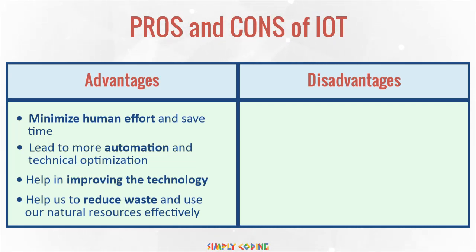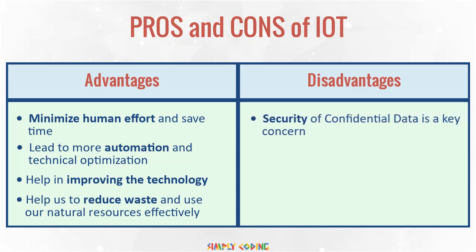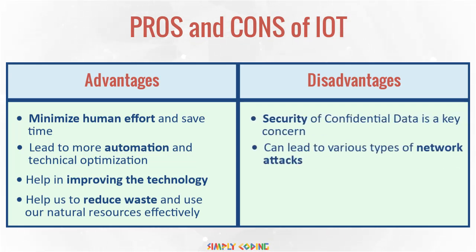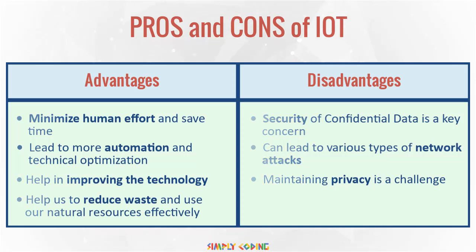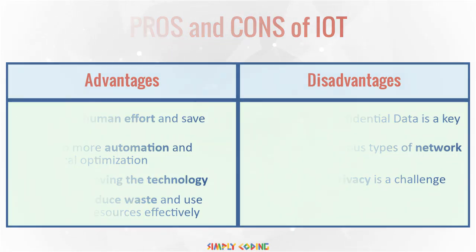IoT does have a few disadvantages as well. Security of confidential data is a key concern. It can lead to various types of network attacks, leading to shutting down of home appliances or industries. Maintaining privacy is also a challenge as it means more and more personal data is shared online.